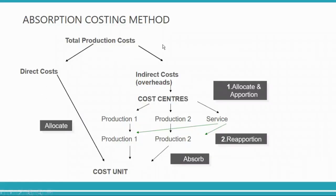This slide shows the entire process of absorption costing. Total production cost consists of direct and indirect costs. Indirect cost means overheads. Direct cost you straight charge to the product, but indirect cost you need to go through three steps: you allocate, apportion, then reapportion, and then you absorb.